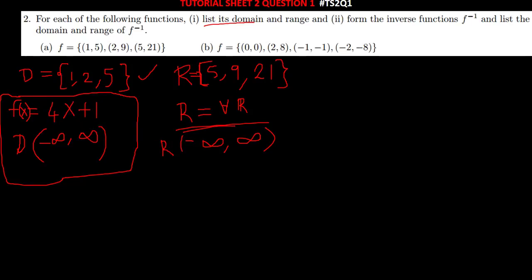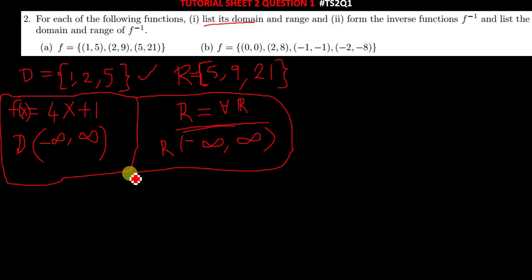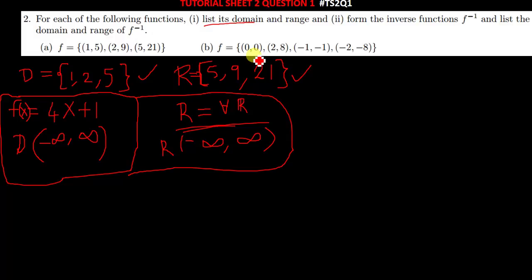That's it for this part — this question is simple. The same applies to the second part. If told to list, just take the input values: zero, two, negative one, negative two. Then the range is just the outputs: zero, eight, negative one, negative eight.